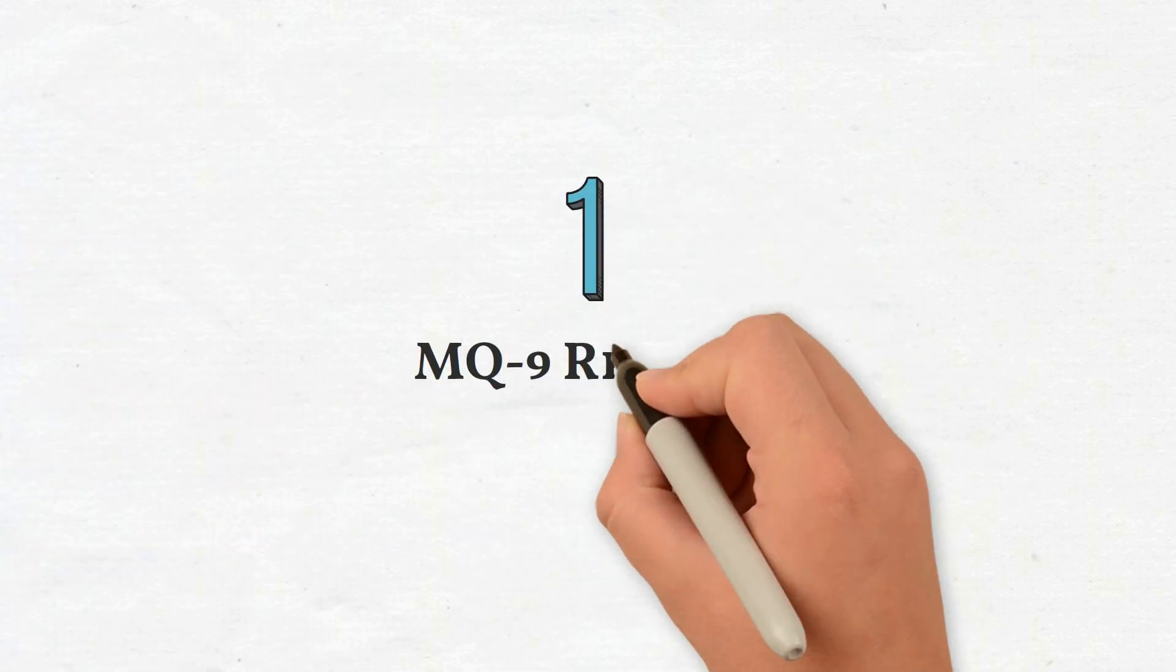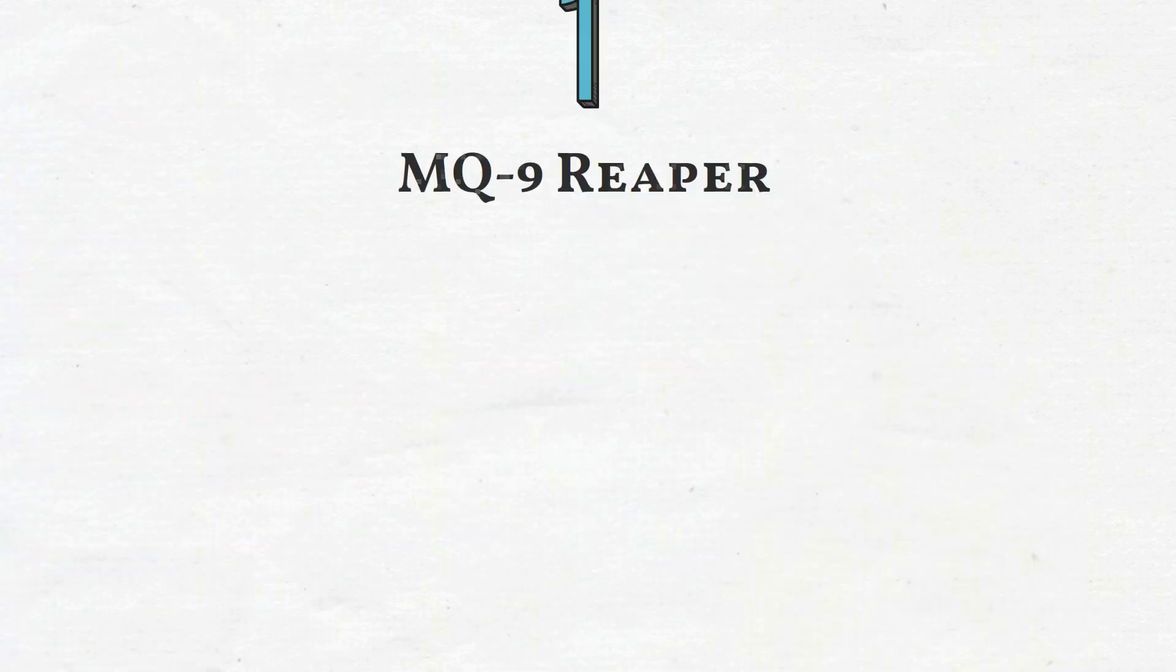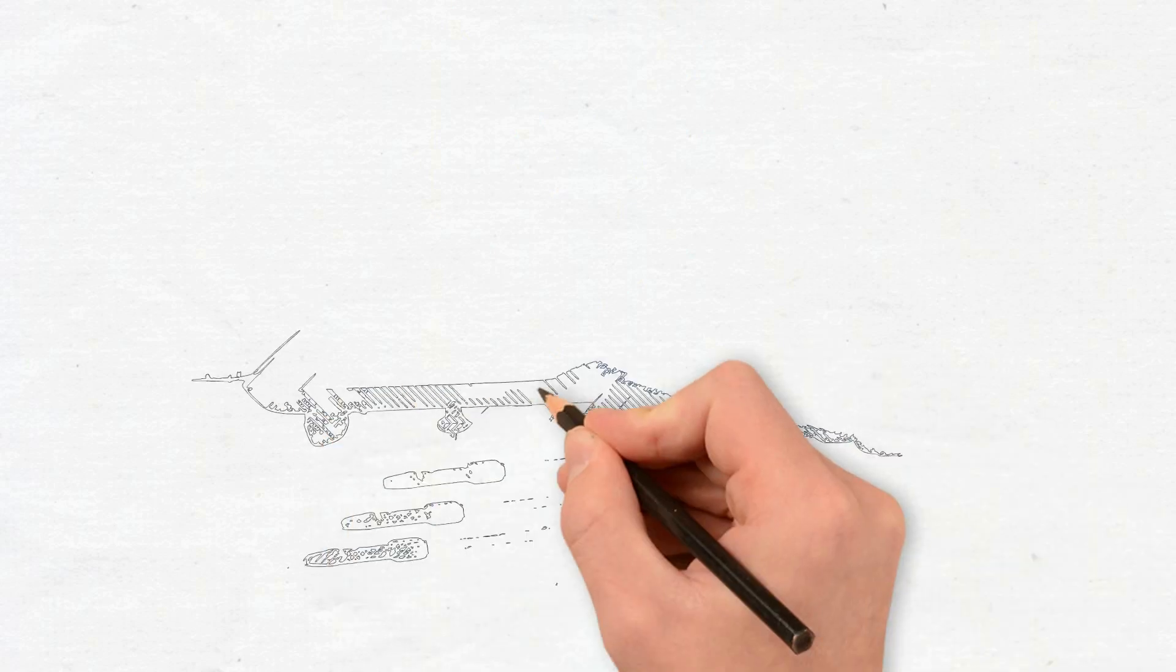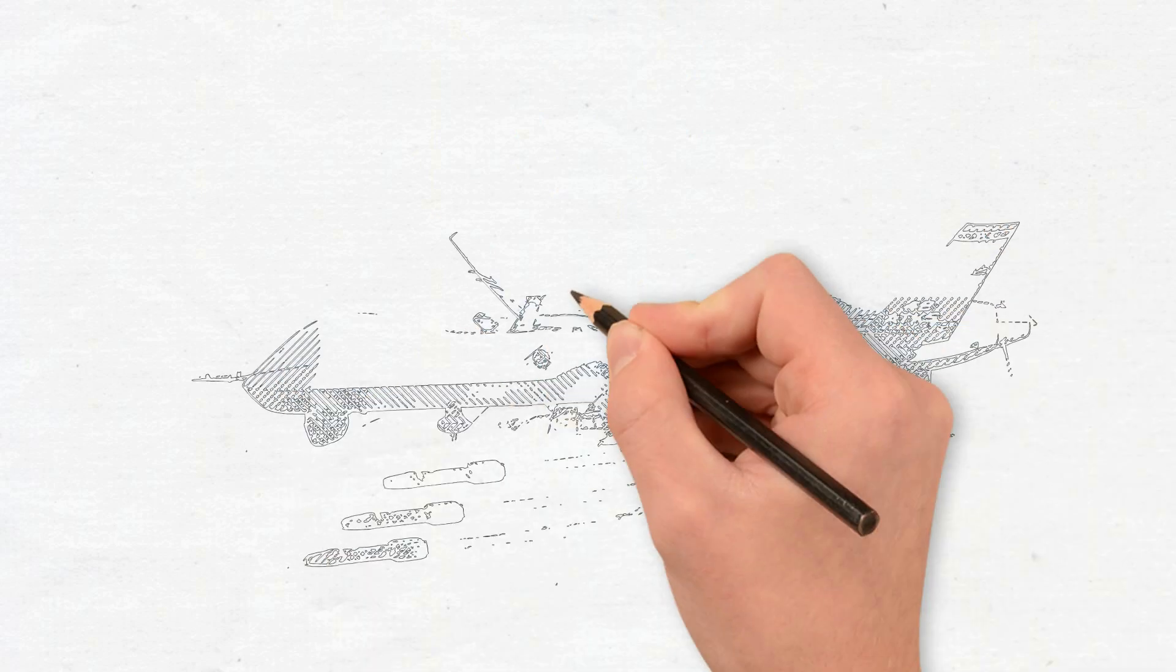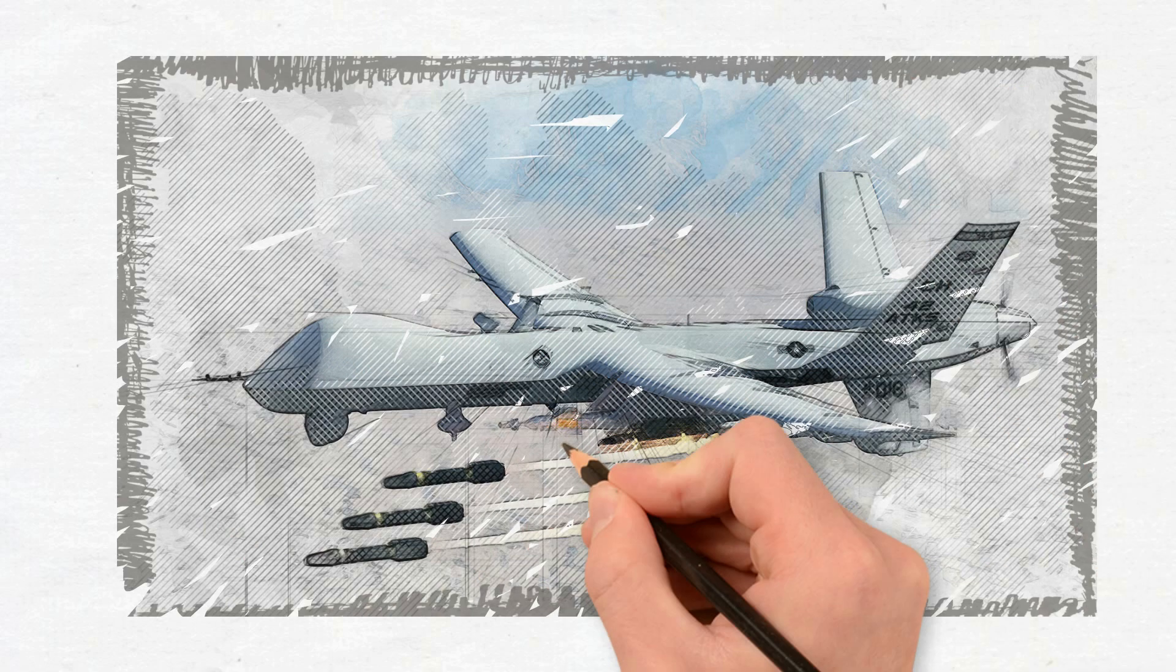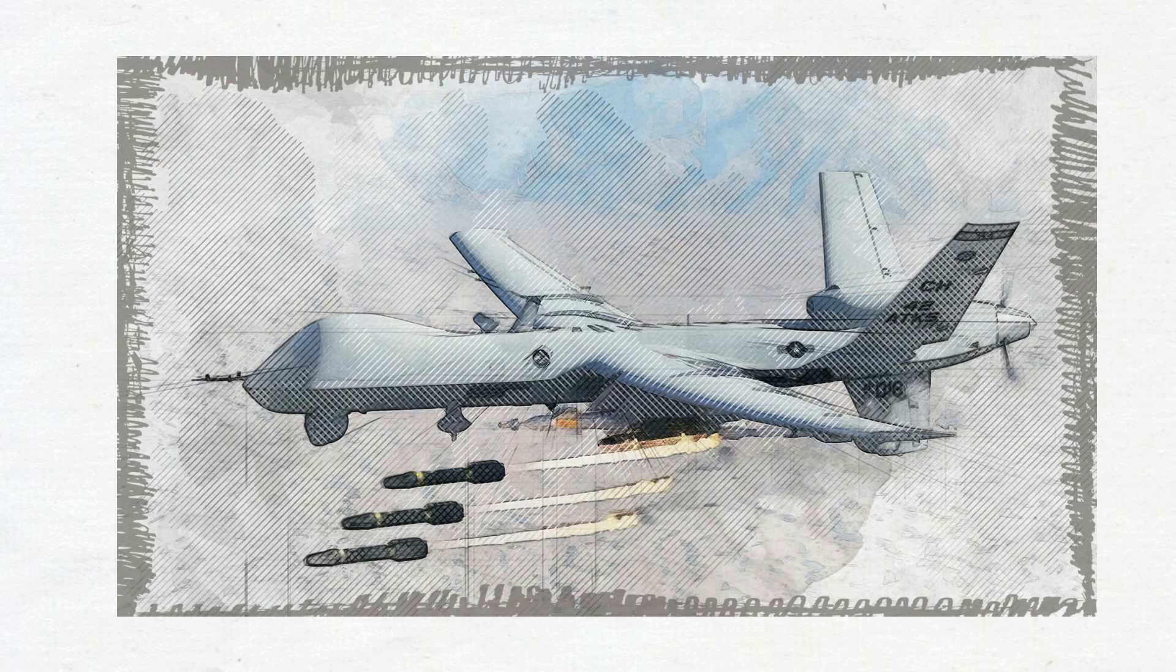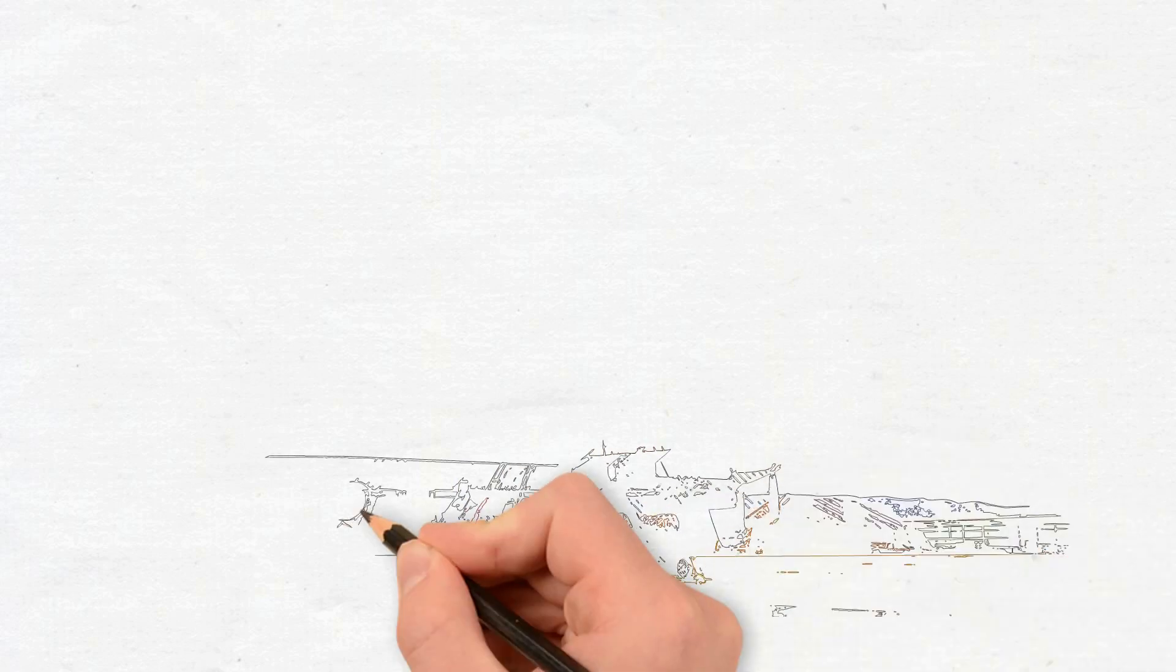The MQ-9 Reaper is the first hunter-killer unmanned aerial vehicle in the world with long-range, high-altitude surveillance capabilities. In comparison to the MQ-1, the MQ-9 is a larger, heavier, and more potent General Atomics aircraft.